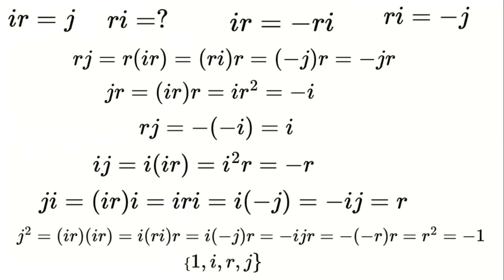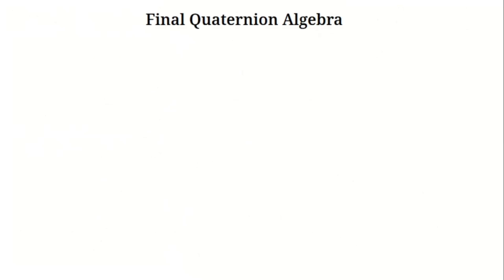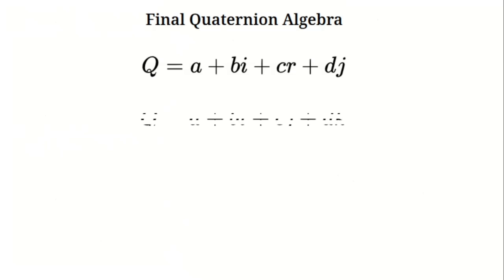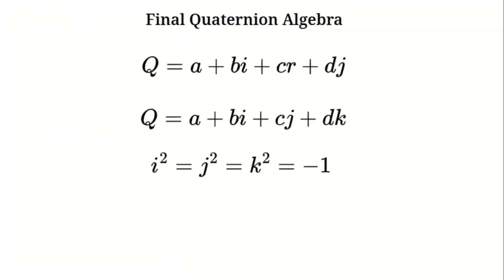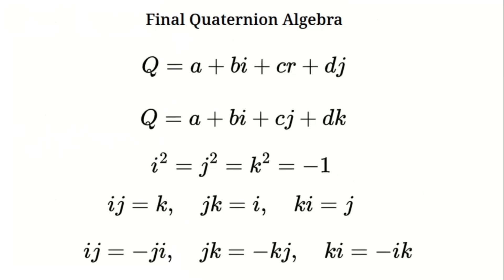Now we've got something amazing. Our number q equals a plus b times i plus c times r plus d times j is closed under multiplication and behaves beautifully. If we rename r as k — just like Hamilton did — then we get q equals a plus b times i plus c times j plus d times k. The rules are: i squared, j squared, and k squared all equal negative 1; i times j equals k; j times k equals i; and k times i equals j. Everything is anticommutative, so i times j equals negative j times i, and so on. This is the full quaternion algebra. In the next video, we'll take it even further with quintonions, a five-dimensional number system. Stay tuned.